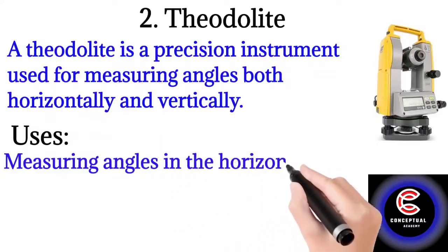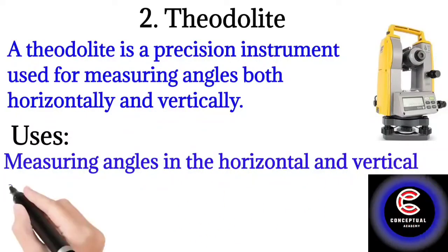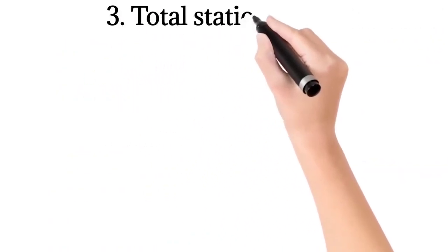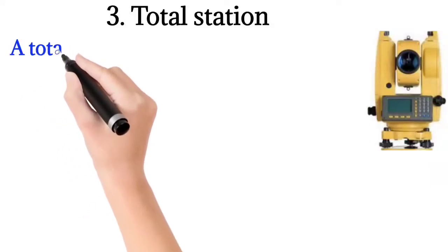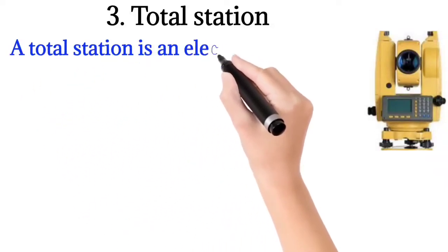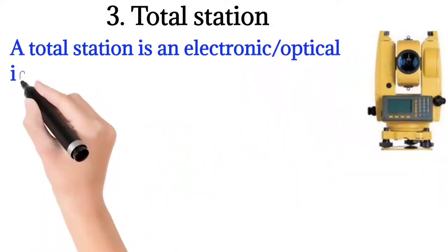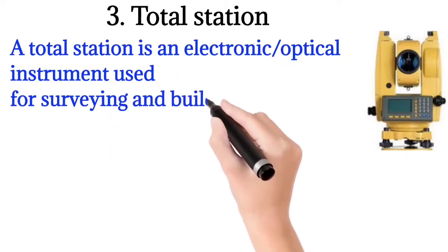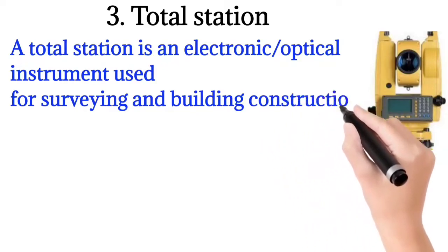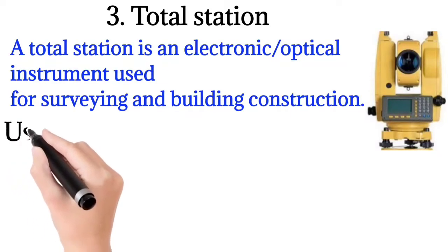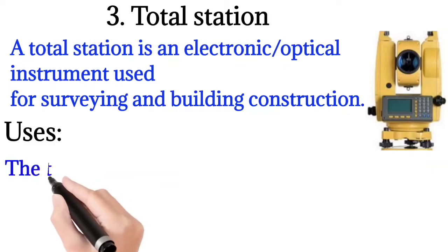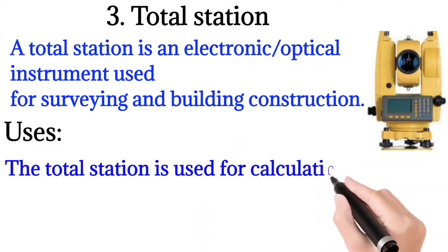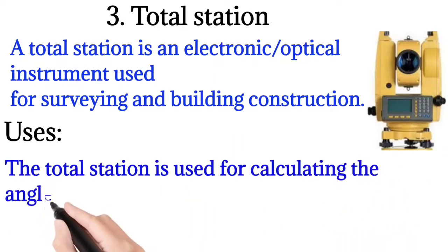Instrument number three: Total station. A total station is an electronic optical instrument used for surveying and building construction. Uses of total station: The total station is used for calculating angles and distances both.